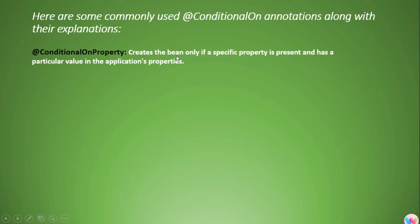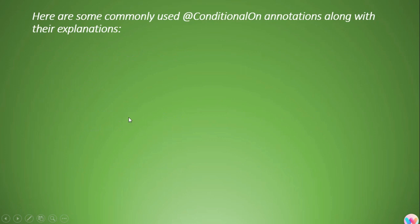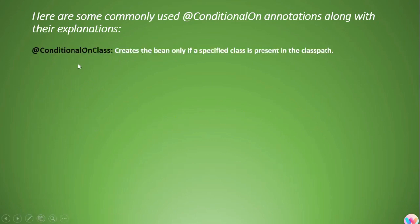The second type is @ConditionalOnProperty. This will create the bean only if a specific property is present in the application.properties file. For example, suppose we have a key-value pair like myapp.feature.enabled — the bean should only be created if the value of this key is true. If the value is false, the bean will not be created. This can be achieved using the @ConditionalOnProperty annotation.